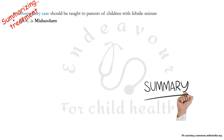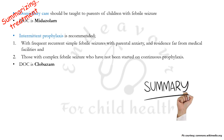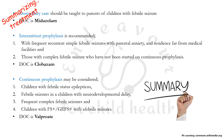Domiciliary care should be taught to parents, including the dose and method of intranasal midazolam — the drug of choice — at 0.2 mg/kg. Intermittent prophylaxis is recommended in frequent recurrent simple febrile seizures with parental anxiety and distant residence, and in complex febrile seizures not on continuous prophylaxis; drug of choice is clobazam. Continuous prophylaxis — a new AOCN addition — should be considered in febrile status epilepticus, febrile seizures with neurodevelopmental delay, frequent complex febrile seizures, and febrile seizure plus or GEFS+ with afebrile seizures; drug of choice is valproate.